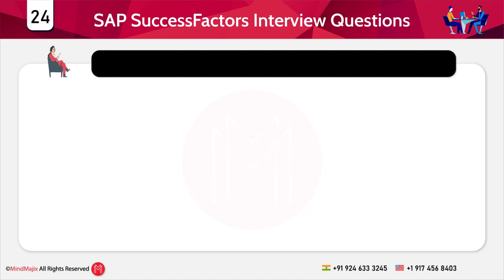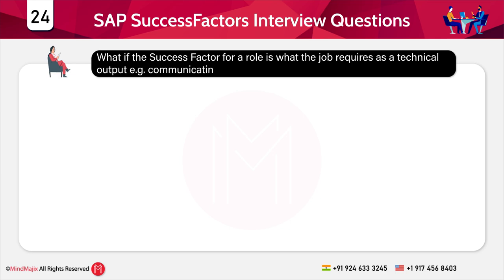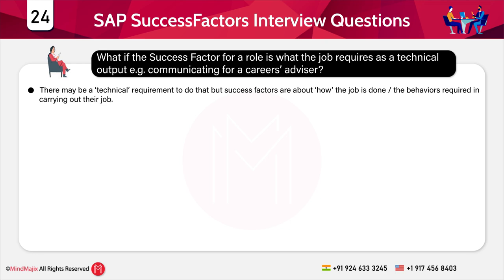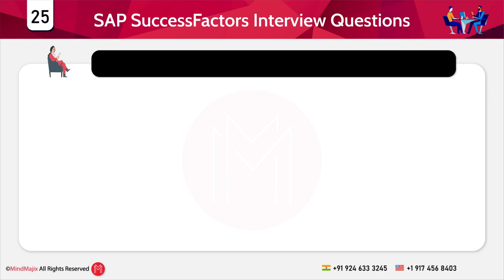The next question is: what if the success factor for a role is what the job requires as a technical output — for example, communicating for a careers advisor? There may be a technical requirement to do that, but success factors are about how the job is done or the behaviors required in carrying out the job efficiently.